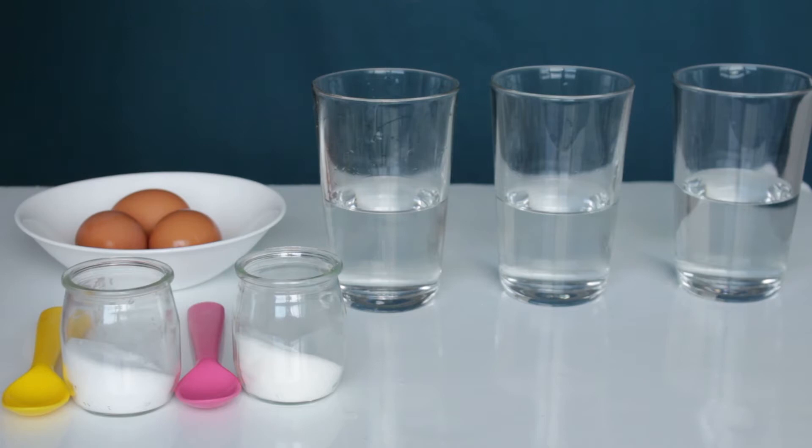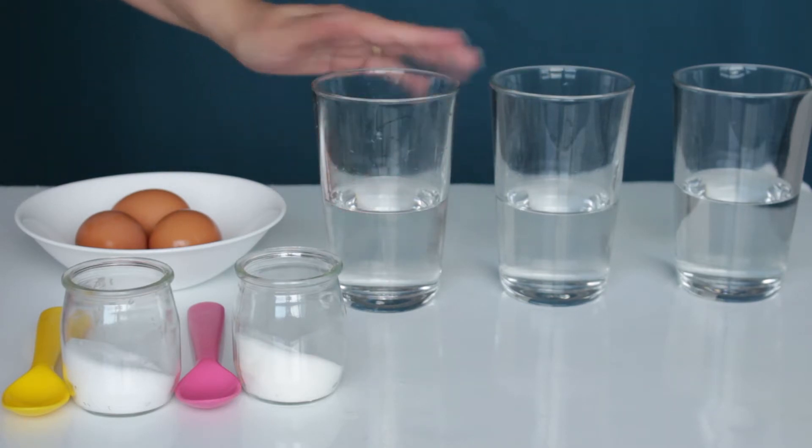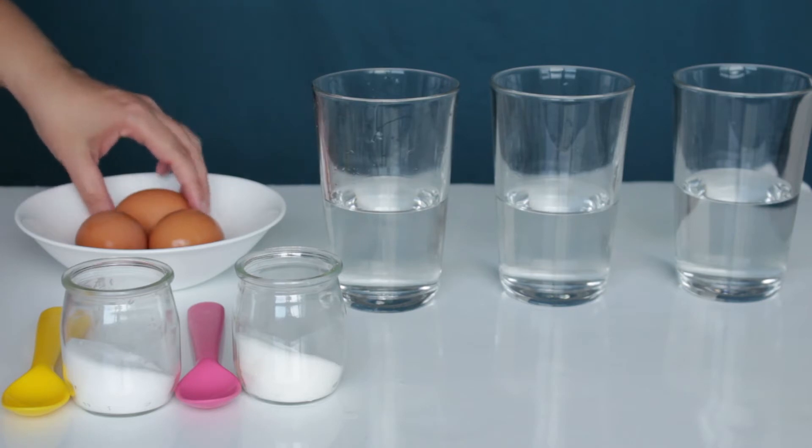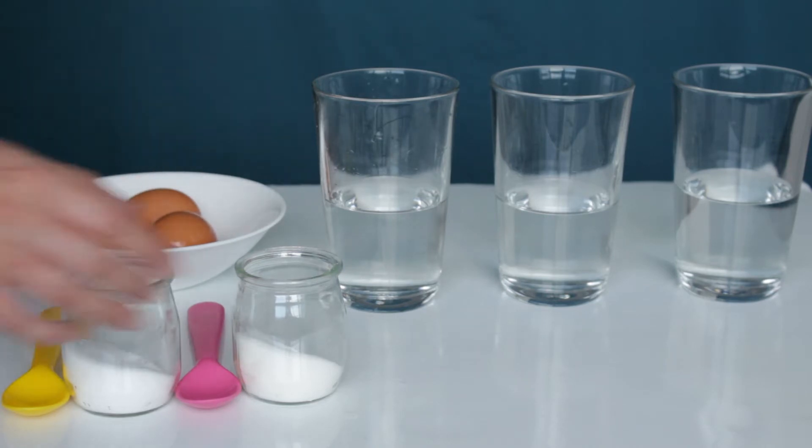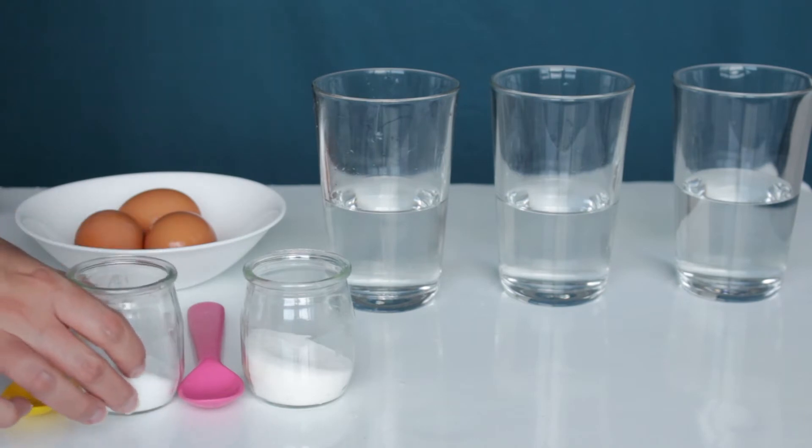So you just need to have three glasses of water, about half is enough, not too much. Three eggs, or if you have just one you can use the same but it's nice to see the comparison between them. A little bit of sugar, about three spoons, and a little bit of salt, about three spoons.